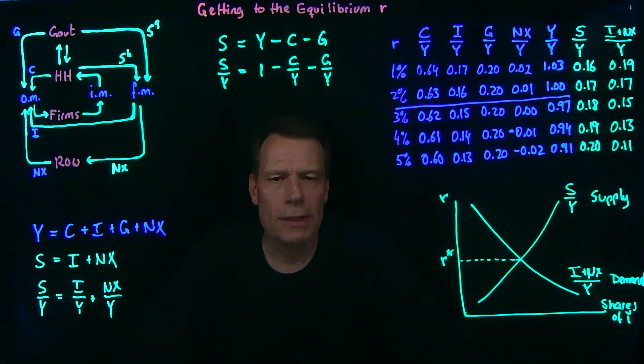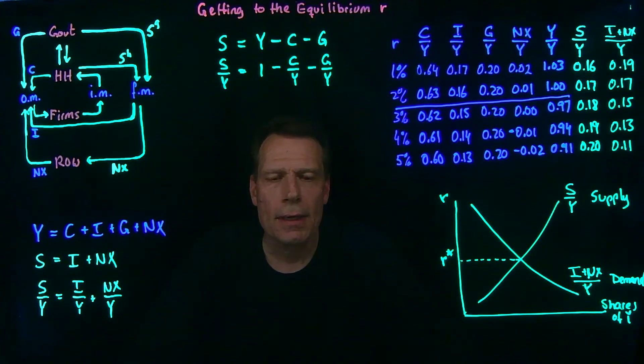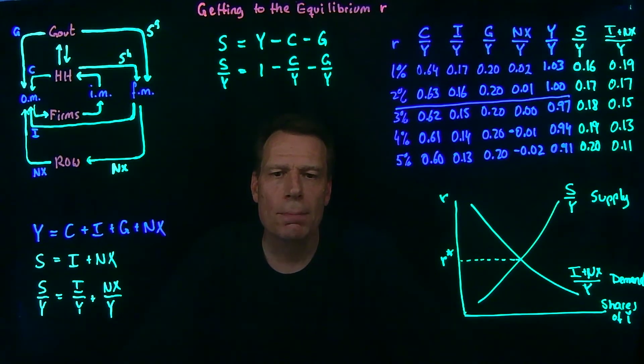Now before you take the quiz, I'd like you to think about one thing. Take this table that represents our economy. And suppose that the government suddenly decides to undertake a massive infrastructure program or is engaged in a sudden massive war. And as a result, government purchases have to go up as a share of GDP. We've held those as exogenously at 0.2 so far. Suppose that the share of government savings, the share of government purchases, goes up to 0.29.